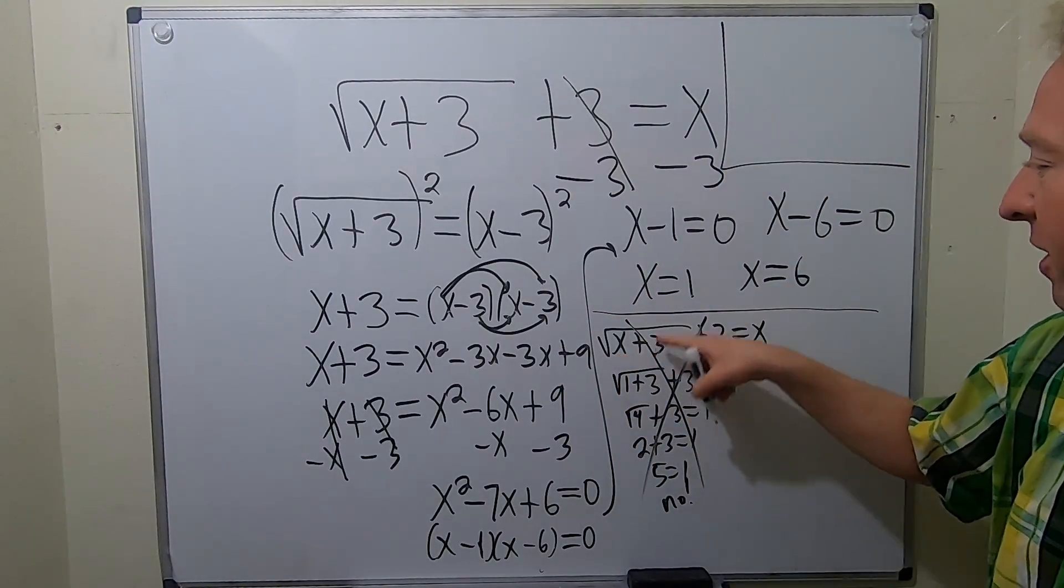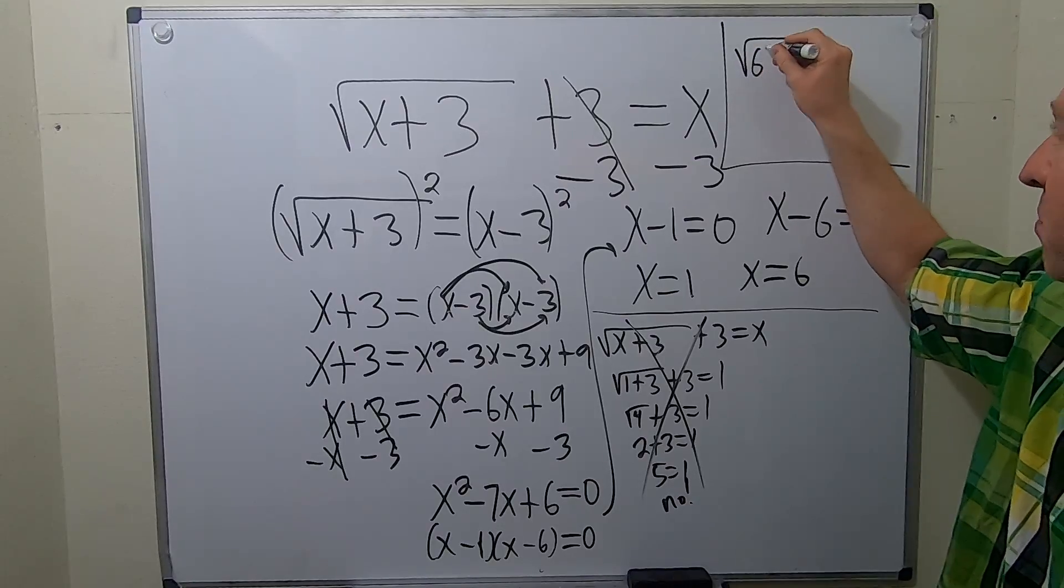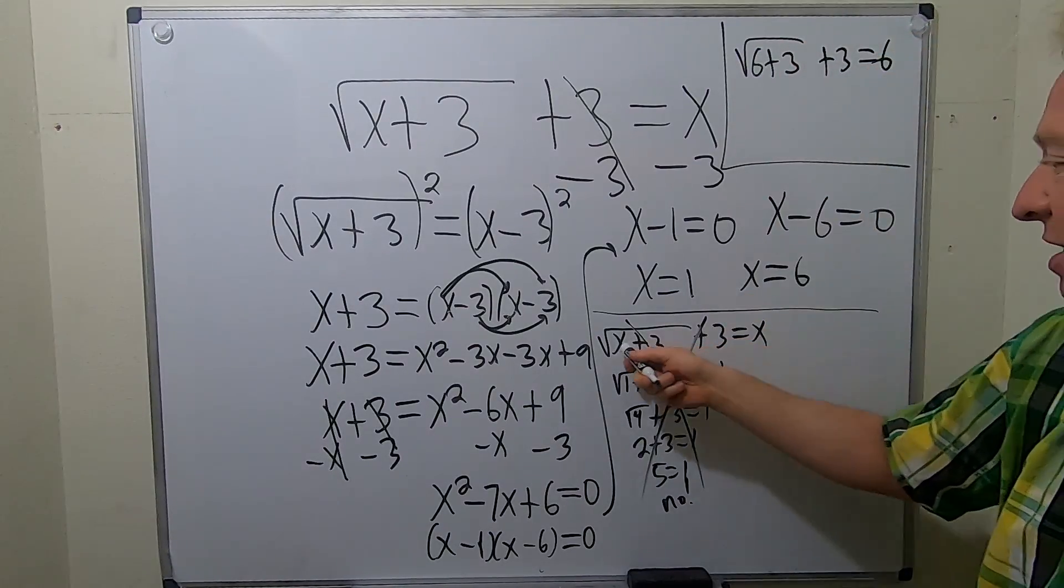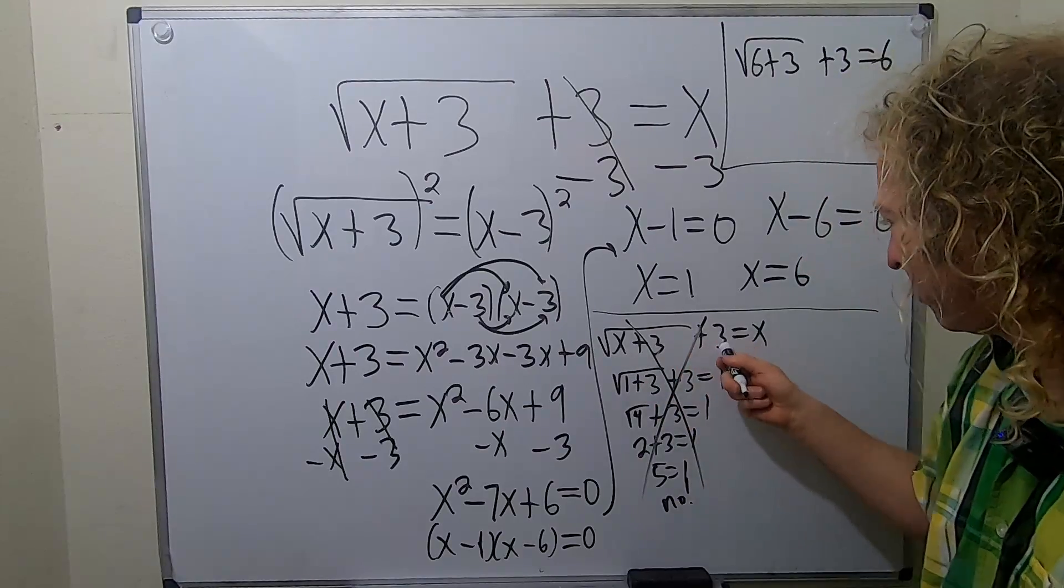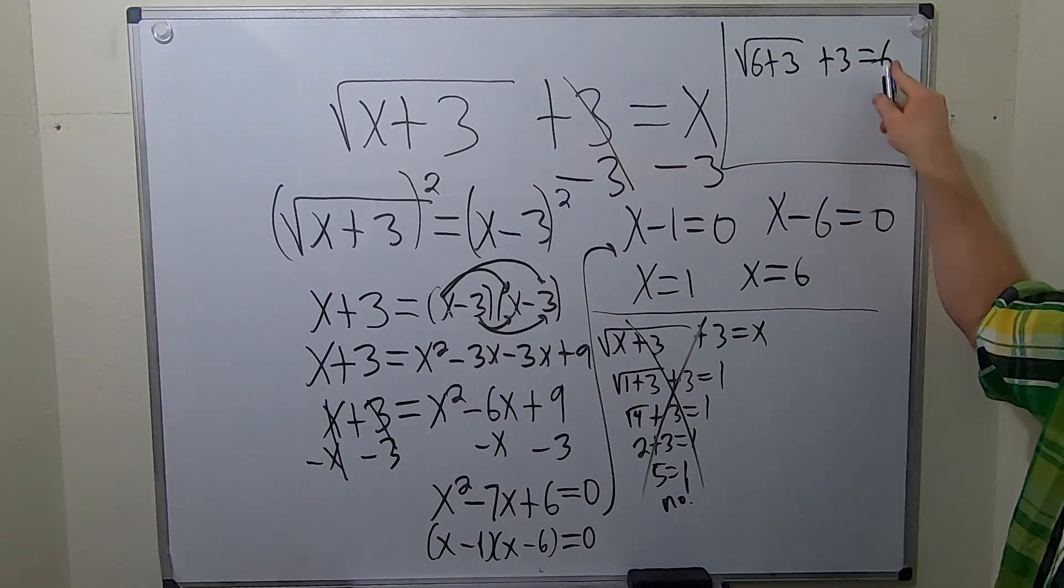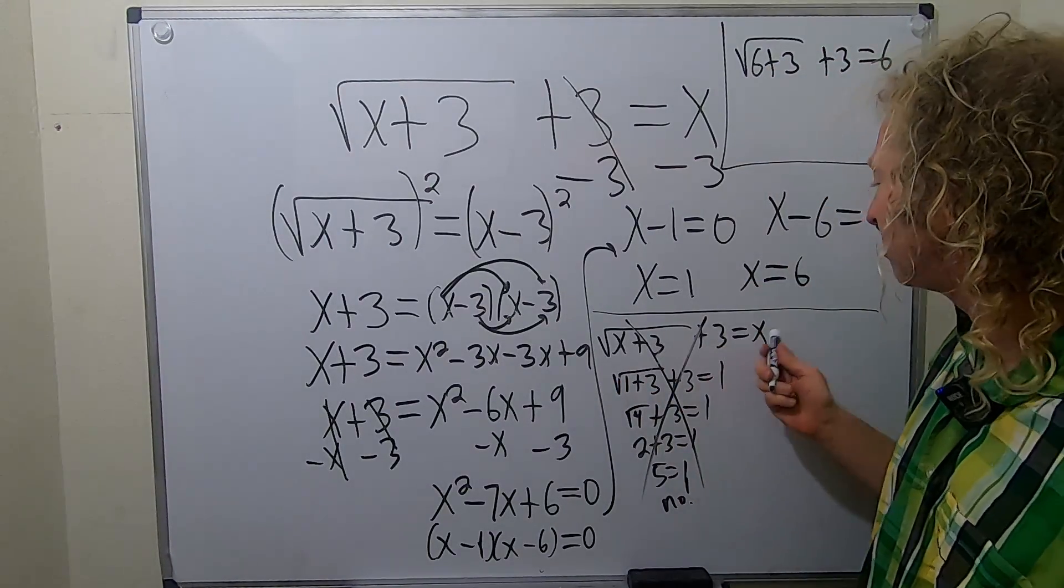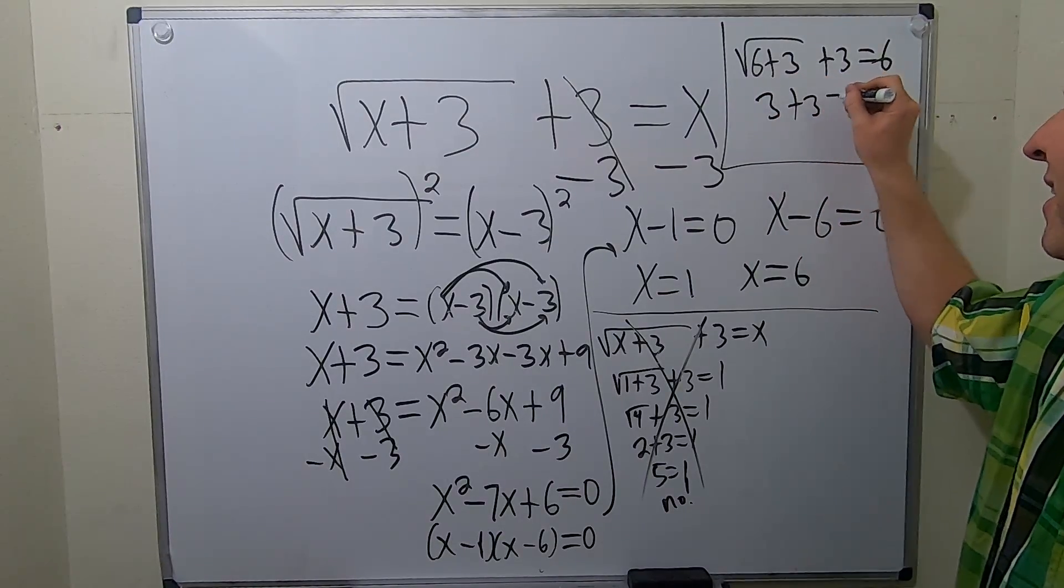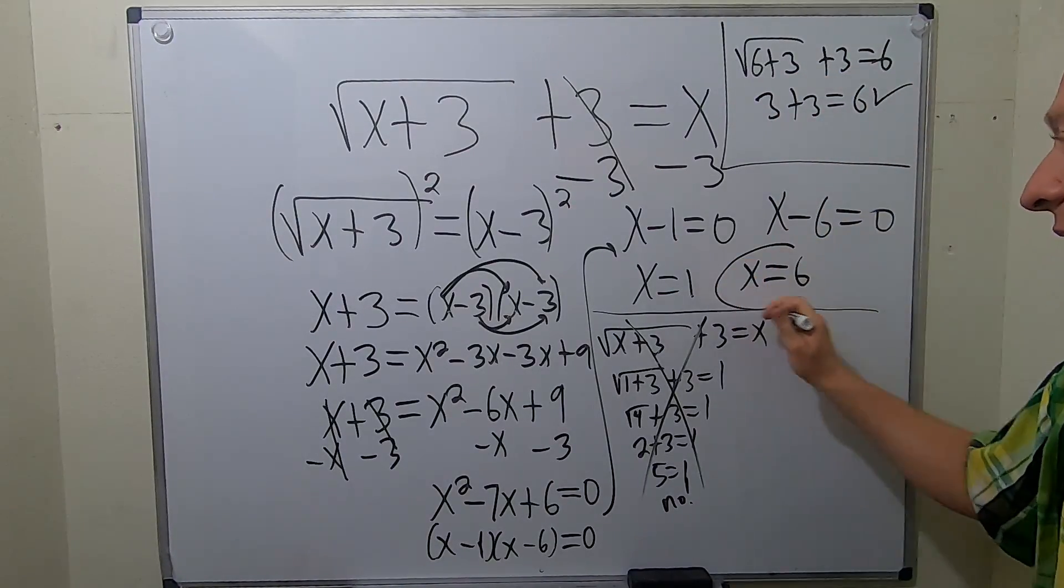Let's check 6. I really hope 6 works. So square root of 6 plus 3 plus 3 should be equal to 6, right, because x is 6. 6 plus 3 is 9, square root of 9 is 3, plus 3 equals 6. Yep, looks good! Hooray, 6 is the answer.